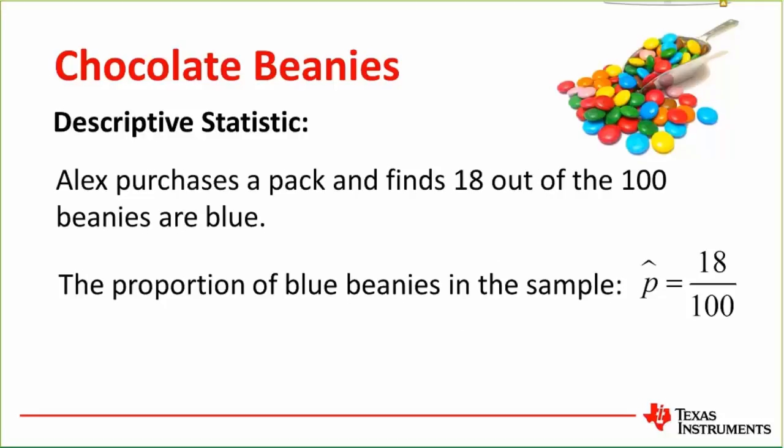Now suppose he's opened up his bag and indeed counted 18 blue beanies. This is no longer a probability — it's a statistic. There's a small chance of getting hit crossing the road — that's probability. But if you actually do get hit, you become a statistic. So we're now looking at a descriptive statistic: the proportion of blue beanies in this sample was 18 out of 100.